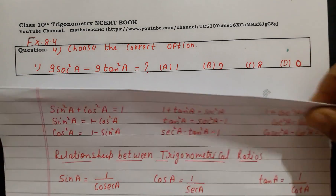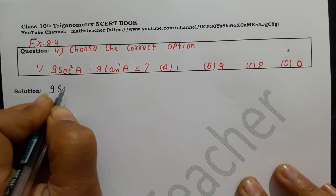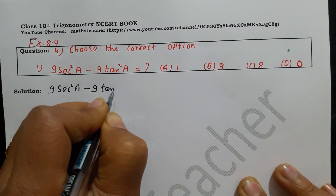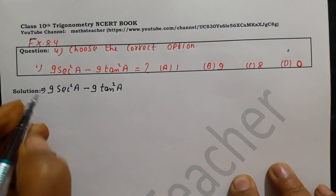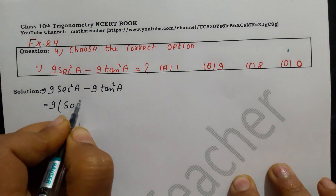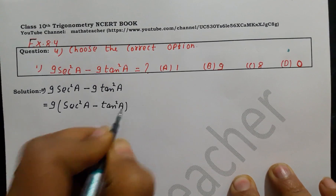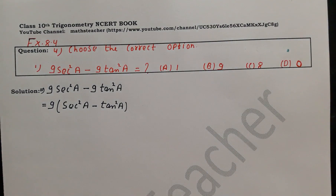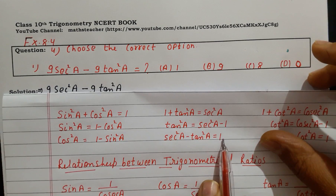For the first question, we write: 9 sec²A minus 9 tan²A. This is our left-hand side. We take 9 as common, giving us 9 times (sec²A minus tan²A). As we know from the identity shown, sec²A minus tan²A equals 1.